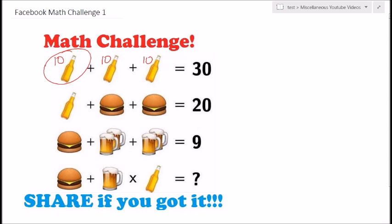Looking at the second equation, we now know the bottle is 10, so carrying that value down: 10 plus 2 burgers equals 20. That means the two burgers together must be 10, which means each one must be 5.